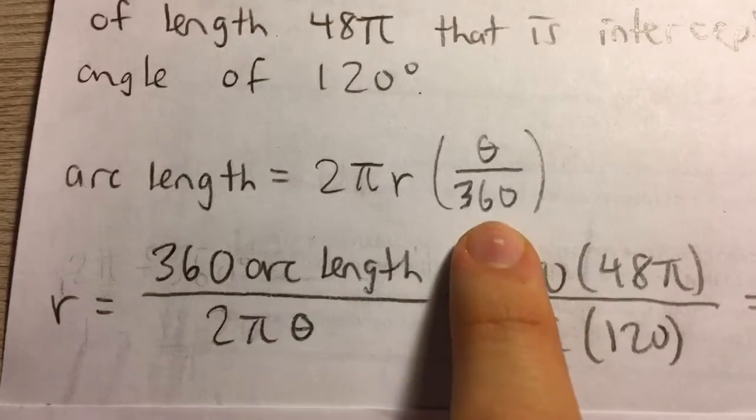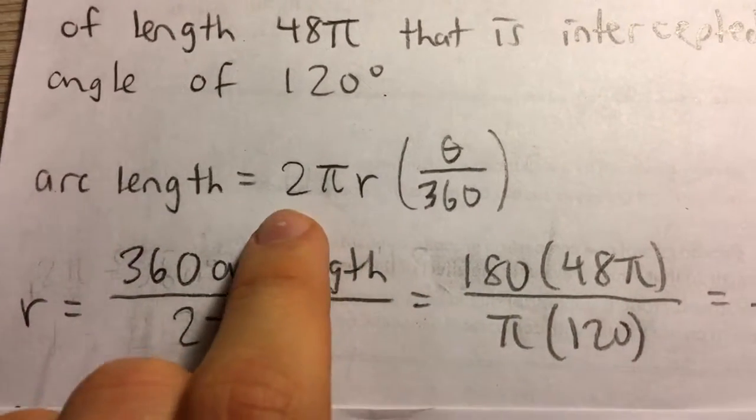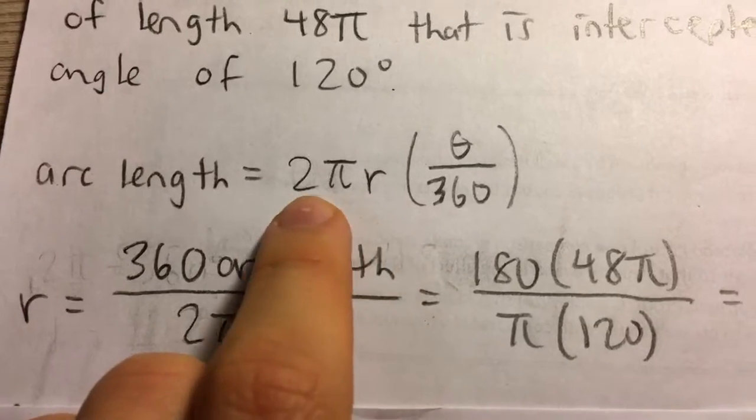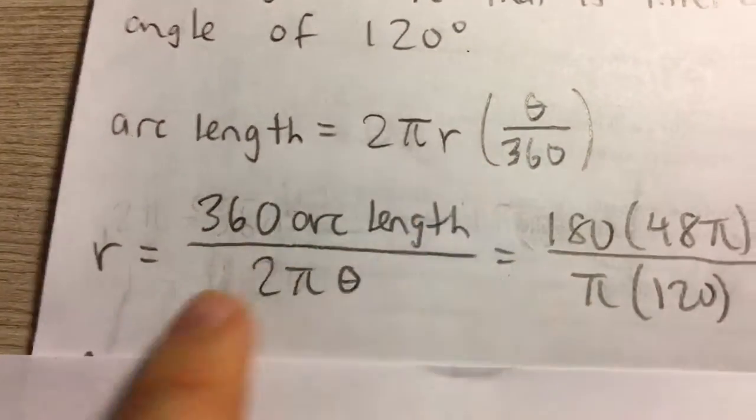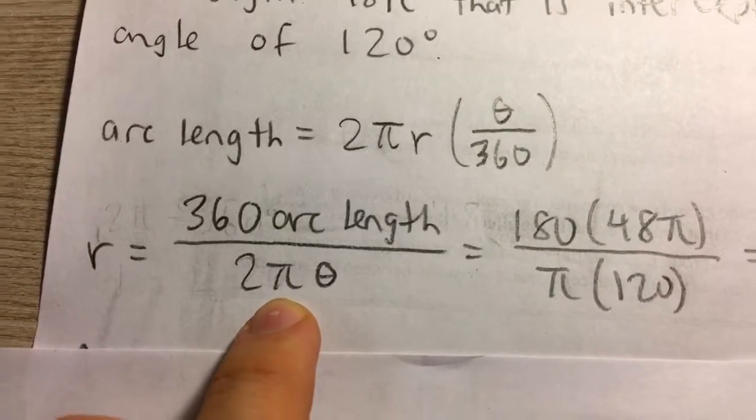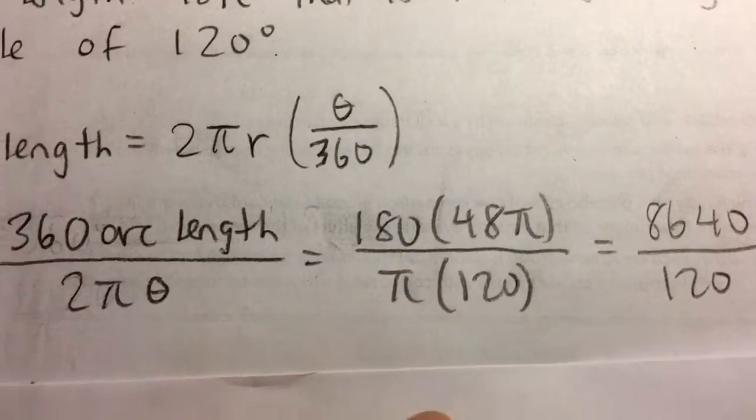So I just isolated r by multiplying both sides by 360. So I have 360 arc length and then dividing both sides of the equation by 2π and θ to get r by itself on the side. And I have 2πθ in the denominator, which you notice 360 over 2 is 180. So that's what I have here.